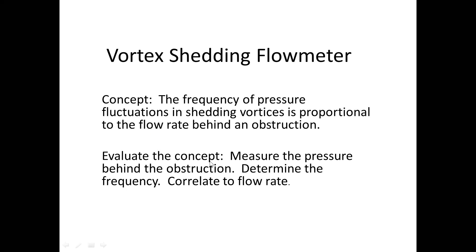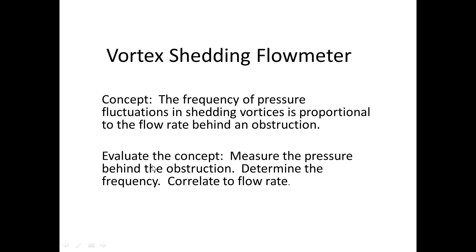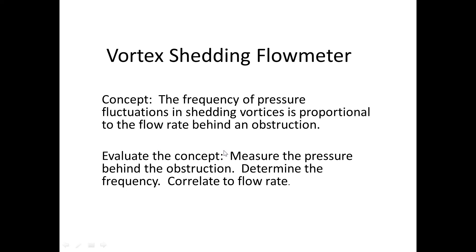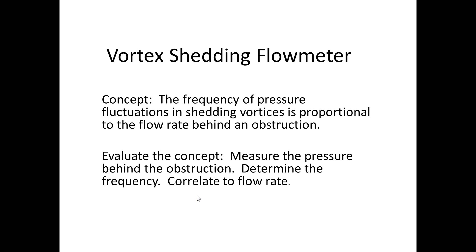If you measure the pressure behind the obstruction, it will fluctuate and vary with time periodically. You could then correlate the frequency of that pressure fluctuation to the flow rate. If this process were to work, you should have a good correlation, and that's essentially how a vortex shedding flow meter works. So imagine that you had an idea for a vortex shedding flow meter and you wanted to evaluate it.